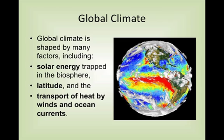Global climate is shaped by many factors including, but not limited to, solar energy, latitude, and transport of heat by winds and ocean currents. Solar energy is very important — if it wasn't for the sun constantly giving us energy and helping to keep our planet warm, our planet would be cold. We rely on the greenhouse effect and that solar energy to keep us warm.